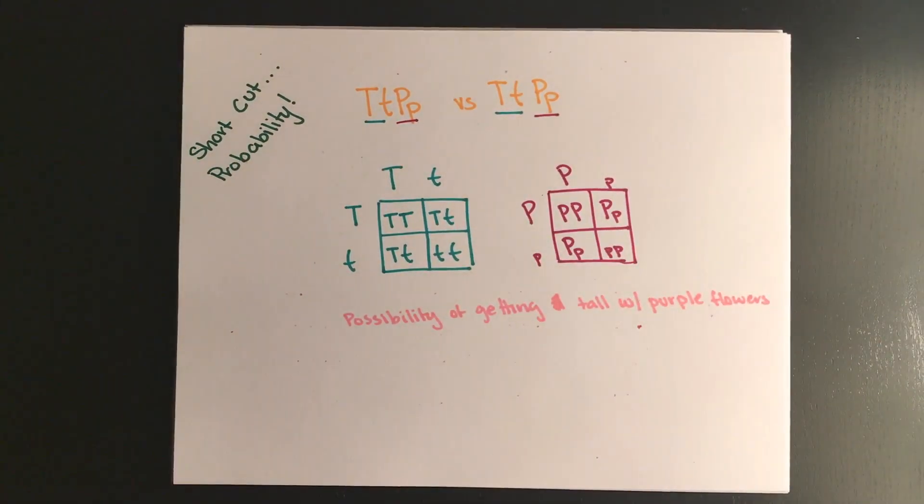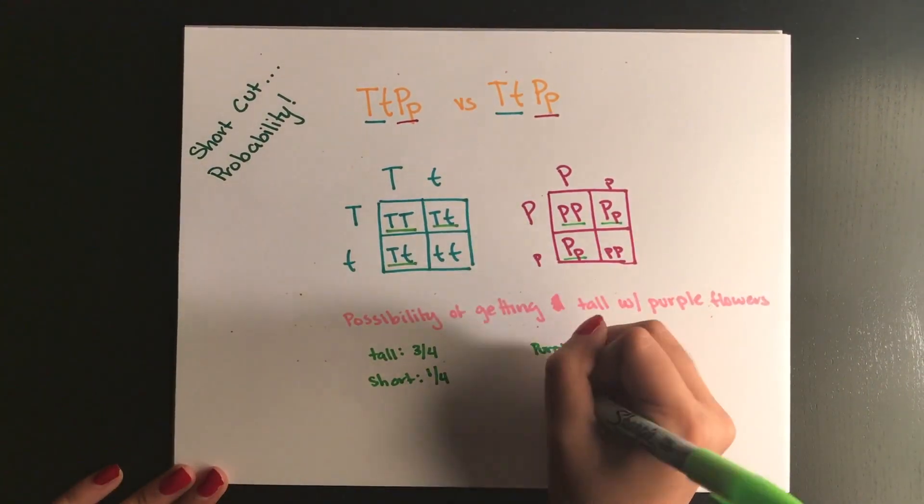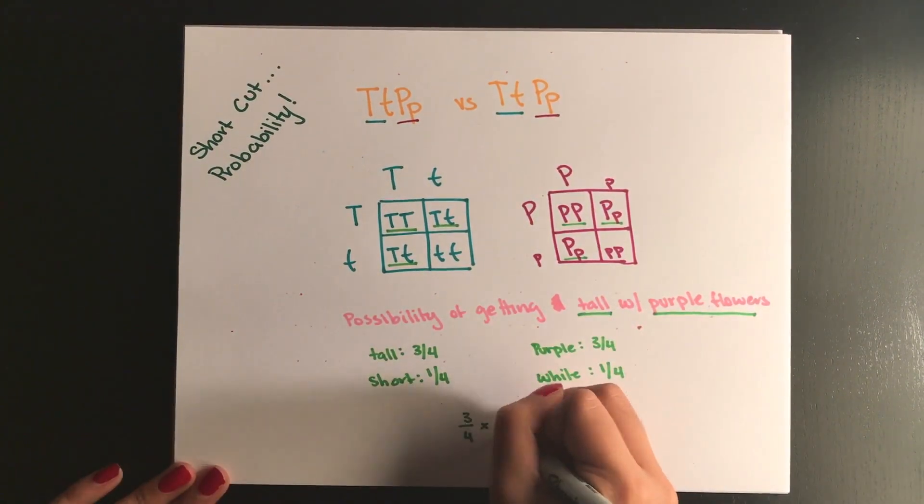To do this we do two monohybrid crosses of the tall allele and the purple flowers, and we multiply the probability of it being tall and it being purple. In doing this, it's three fourths times three fourths which will give us 9 out of 16, which was the ratio that we got from our dihybrid cross.